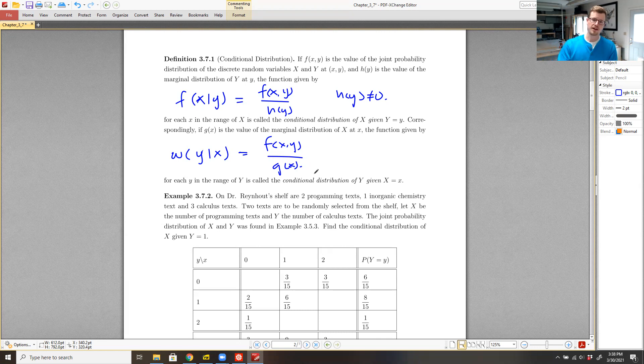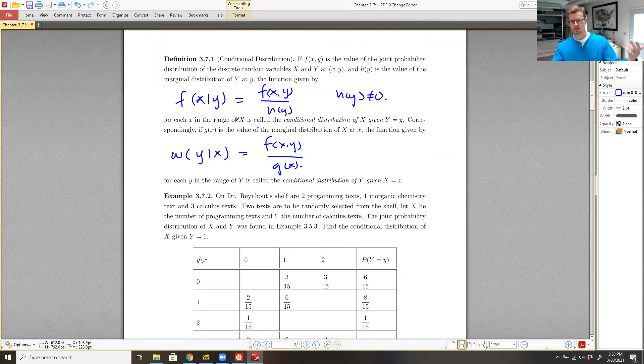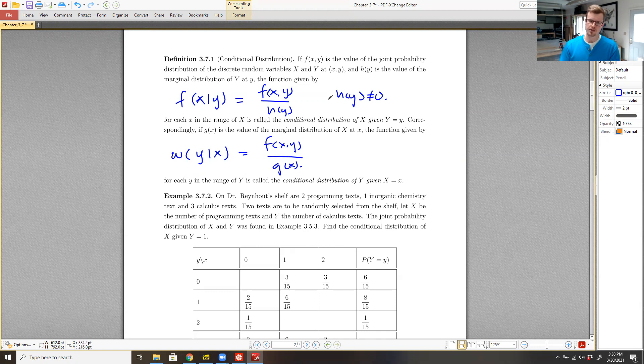Once we specify, in such a case as the marginal distribution of x given y, once we choose a value for y, then we would get that particular marginal distribution, or sorry, that particular conditional distribution. But we'll take a look at that in a later example.